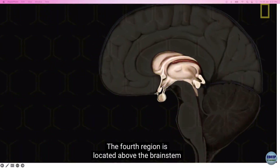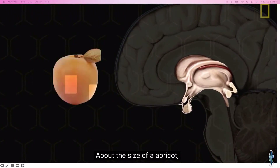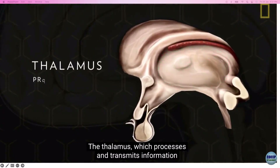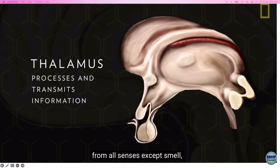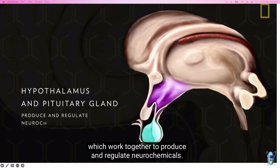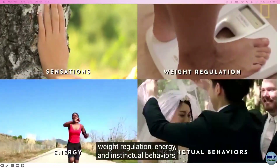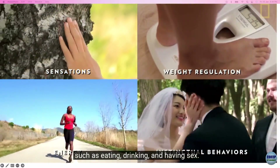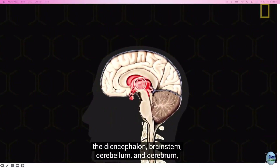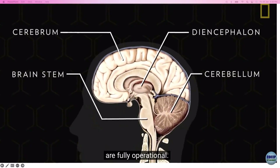The fourth region, the diencephalon, is located above the brain stem and makes up the core of the brain. About the size of an apricot, it is a grouping of several structures: the thalamus, which processes and transmits information from all senses except smell, and the hypothalamus and pituitary gland, which work together to produce and regulate neurochemicals. These structures help govern sensations, weight regulation, energy, and instinctual behaviors such as eating, drinking, and having sex. All four components work in sync to ensure bodily functions are fully operational.